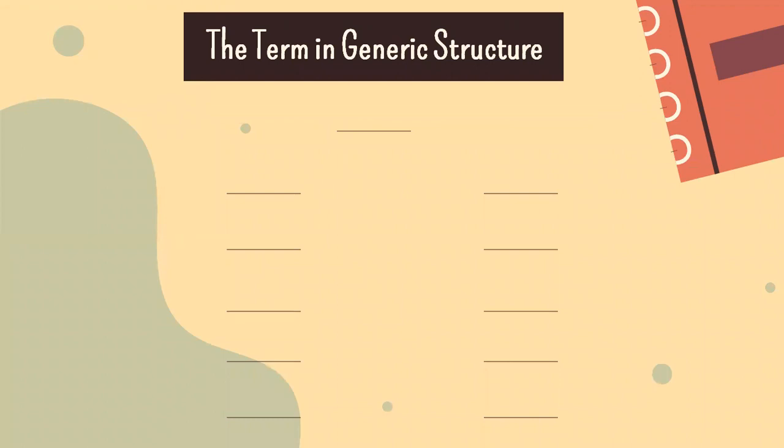This is the term of generic structure. The first is general statement. Judging from its own meaning, the term expresses an opinion in general. Usually the general statement is expressed directly by the author as a form of expression about the phenomenon or event raised. The next is argument, statements that support an issue as well as unsupported statements.